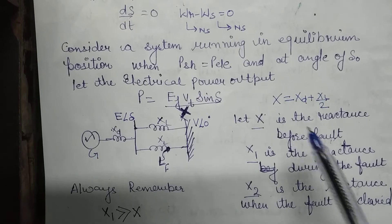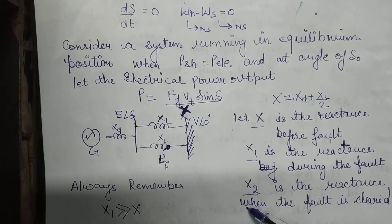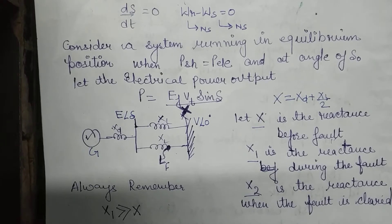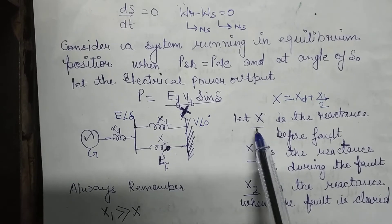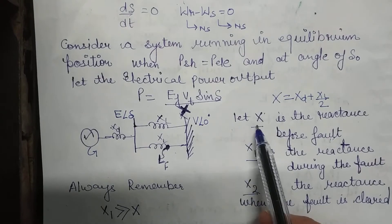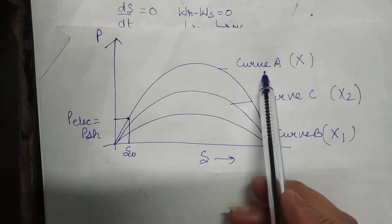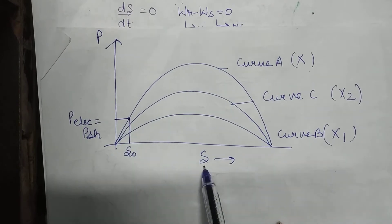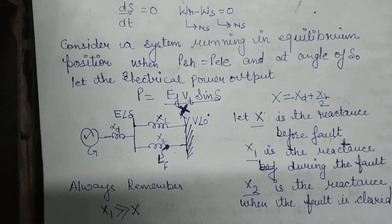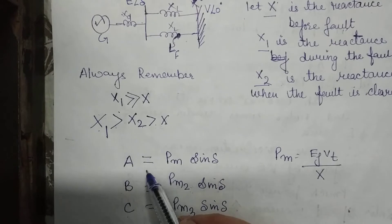X is the reactance before the fault, and it plays a very important role in power system stability and studying the critical clearing angle. The value of X is X_D plus the parallel combination of the two transmission line reactances. When X is the reactance value, the power angle curve looks like curve A — this is Pm sin(delta), where Pm equals EV/X. This is the healthy curve when the system is at its equilibrium position.